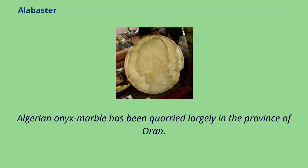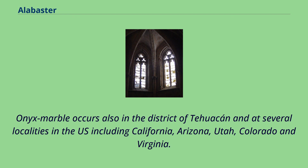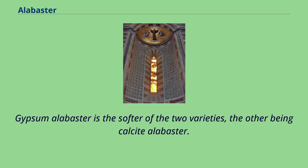Algerian onyx marble has been quarried largely in the province of Orin. In North America and Mexico, there are famous deposits of a delicate green variety at La Pedrara in the district of Tecali, near Puebla. Onyx marble occurs also in the district of Tehuacan and at several localities in the U.S., including California, Arizona, Utah, Colorado, and Virginia.